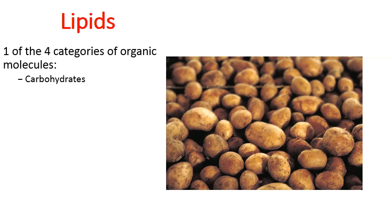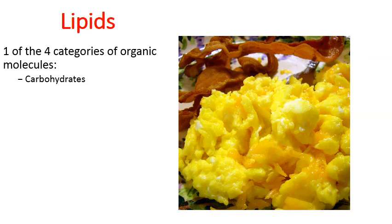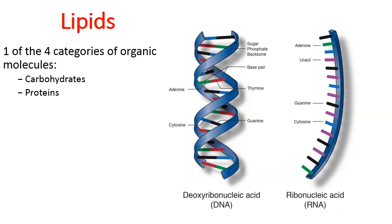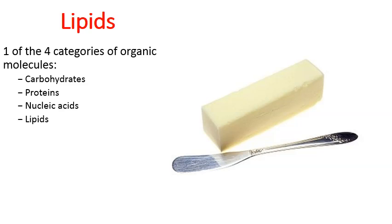So carbohydrates—potatoes are high in starch, and starch is a carbohydrate. Proteins—eggs are high in proteins. That's another one of the categories of organic molecules. Nucleic acids such as DNA and RNA, and lipids. We're going to transition into the saturated and unsaturated fats in a moment.